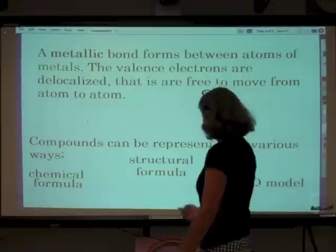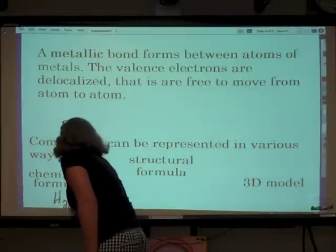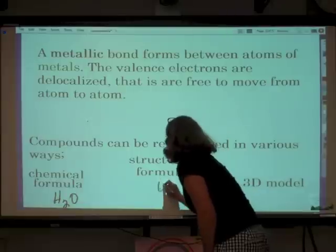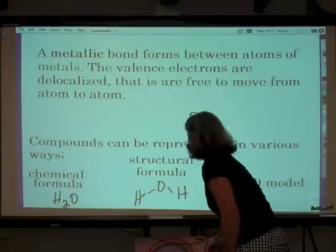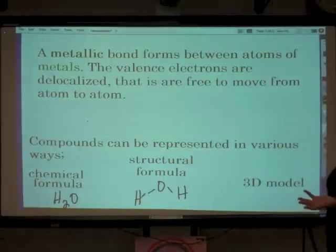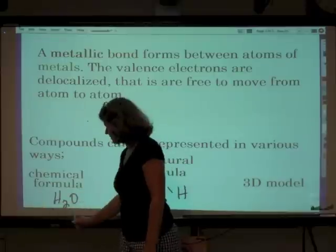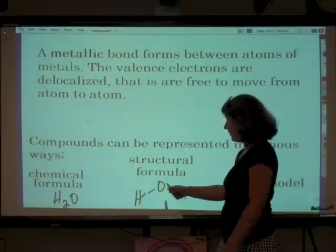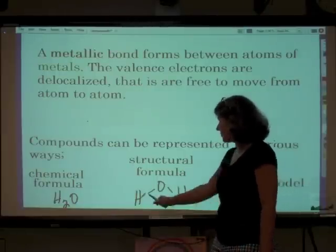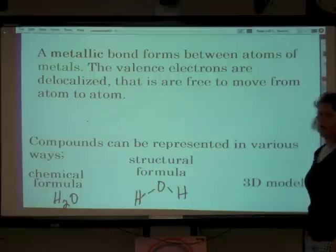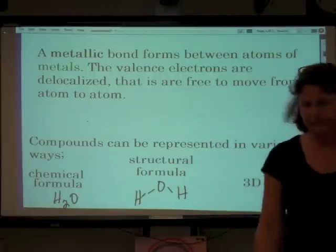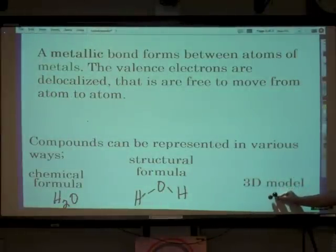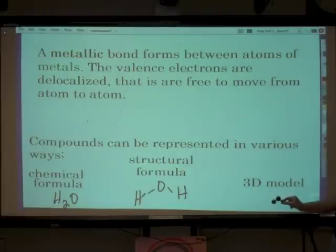So we have chemical formulas like H2O. That's a chemical formula. We have structural formulas, and what a structural formula shows us is the way that the atoms are arranged in the compound. So this basically tells us, okay, we have one oxygen and two hydrogens in this compound. This tells us, well, the oxygen is in the center, and the hydrogens are coming off of that central atom. And then there are three-dimensional models. Can you see it? Here is a three-dimensional model of water. There it is.